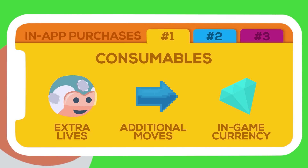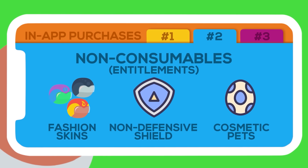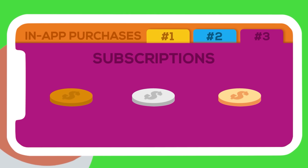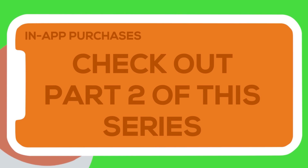Users typically purchase consumables to further their progress through a game. A user can also buy non-consumables, sometimes called entitlements, which are often used to unlock access to features or content within the game — think additional customization options for your characters that are often cosmetic in nature and don't normally enhance game progress. The final type of IAP is subscriptions, which is more typical in general applications than in games. Apps will often use subscriptions to upgrade users to a higher tier of functionality, and the model is most beneficial for apps that consistently provide ongoing value via regularly updated features or content. IAP monetization will be covered in-depth in Part 2 of this series.